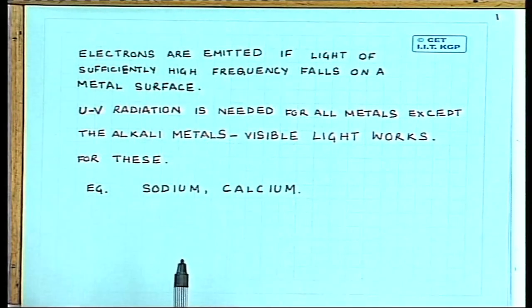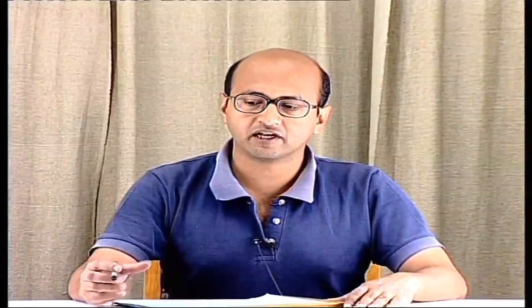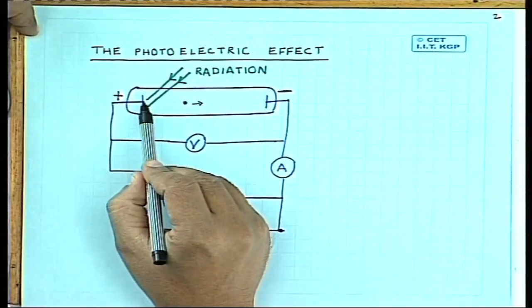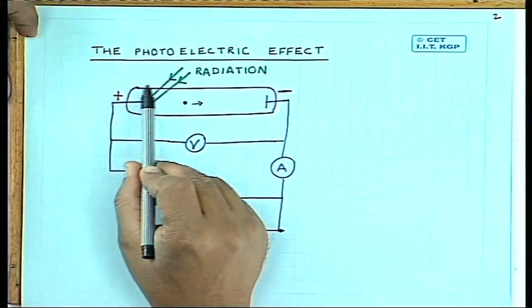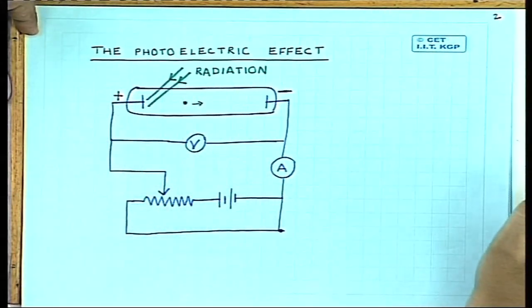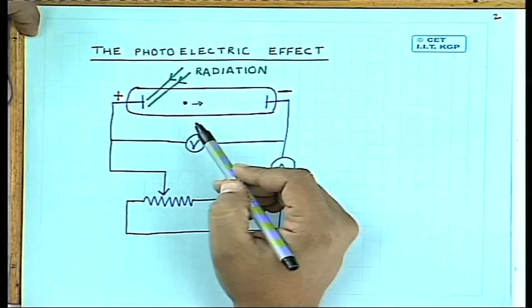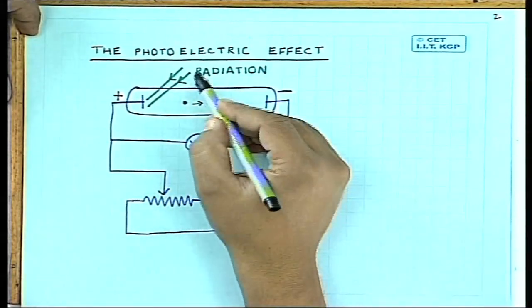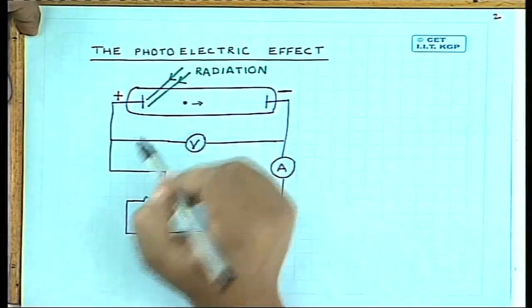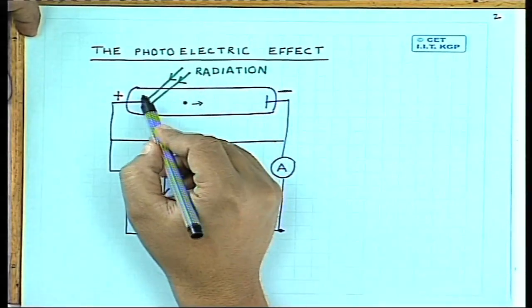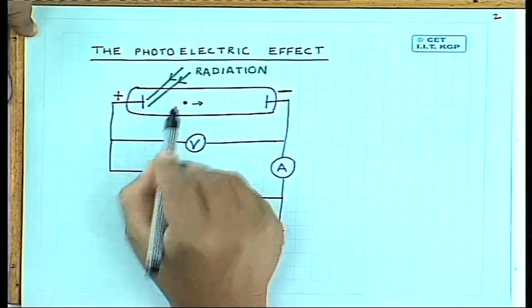For example, for a metal surface like sodium or calcium, if there is visible radiation incident on it, some electrons will be emitted. Let us have a look at the experimental apparatus used to study the photoelectric effect. There is a metal plate enclosed in an evacuated glass chamber. The metal plate could be either sodium, calcium, or some alkali metal, and there is visible radiation incident on it, which will cause electrons to be emitted from this surface.